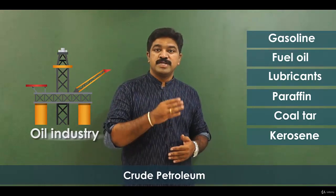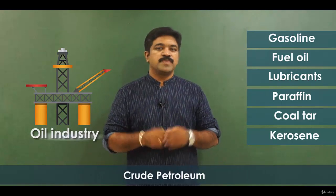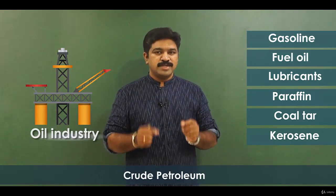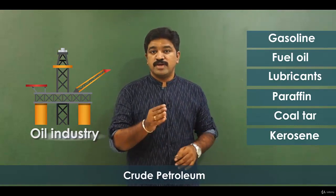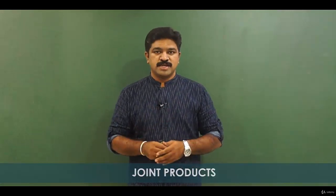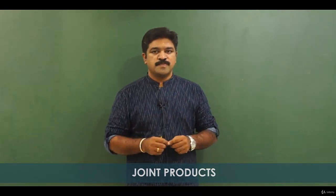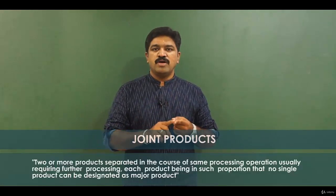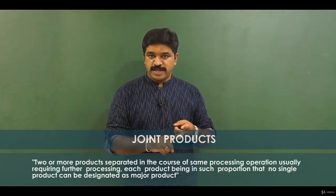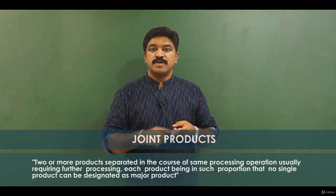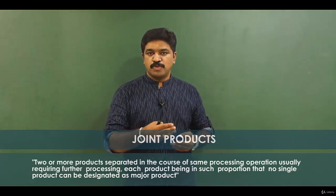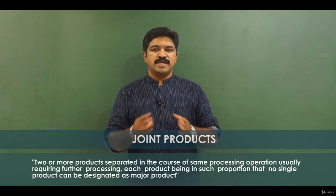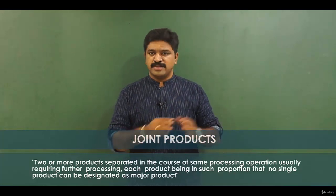Each of these products has significant sale value and you cannot designate one single product as the major product. If this is the nature of products produced, then we call them joint products. The definition of joint products is: two or more products separated in the course of the same processing operation, usually requiring further processing, each product being in such proportion that no single product can be designated as the major product.